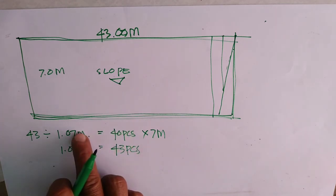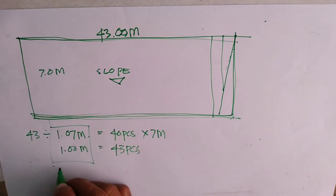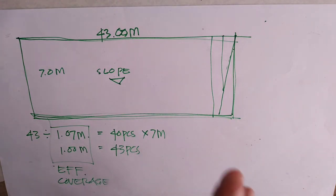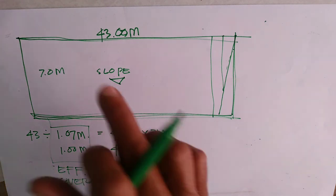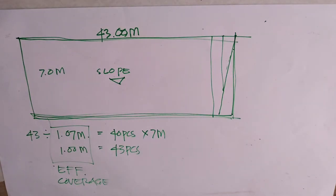Pagka ito yung ginamit nyo, ito kasi yung tawag dyan yung effective coverage. Pagka bumili ka, tatanungin mo kung ano yung effective coverage para malaman mo. Tapos, didivide mo dito sa paglalagyan mo. Ngayon yung linear meters po para makuha nyo